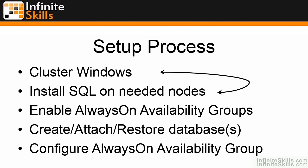Once Windows clustering and SQL Server are installed, enable the Always-On Availability Groups feature on the SQL Server instances. Then create, attach, or restore the databases to all the secondary replicas, and configure the Always-On Availability Group. If you walk through the wizard, it will take care of the create, attach, and restore of databases for you, as well as configuring the Availability Group — handling all of that in one shot. Let's take a look at how to set this up.